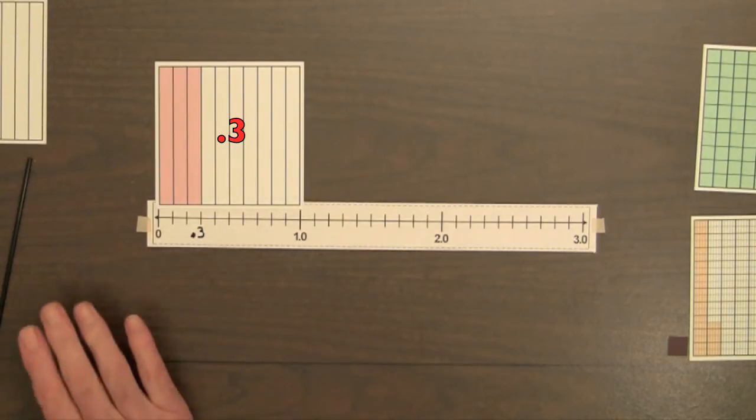Without making this connection from the area model to the number line, students often incorrectly will count the marks on the number line, starting at 0, 1, 2, 3, and think point 3 should be written at the end of the third mark.